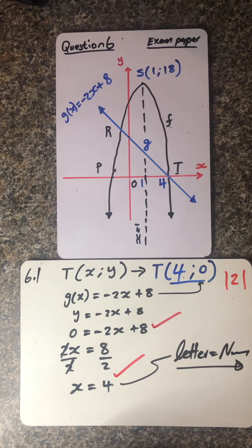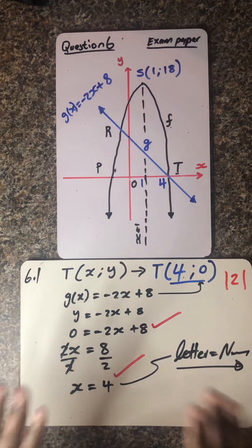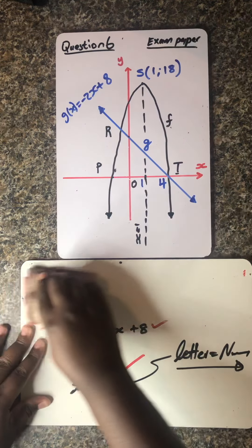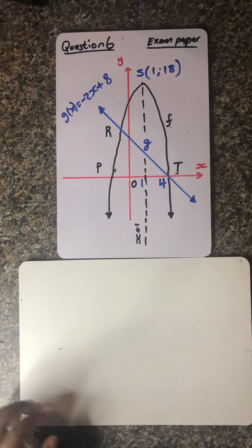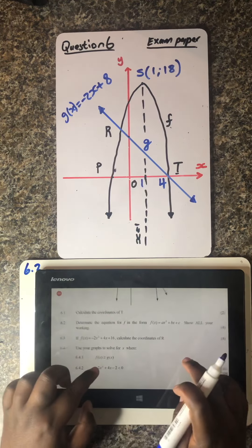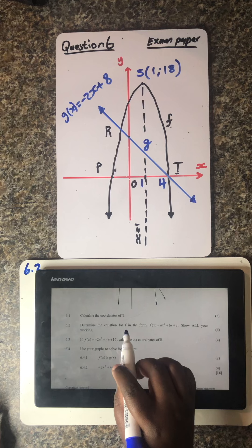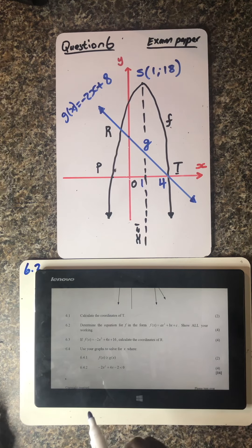So guys, for today's lesson it's actually going to be a bit tricky in a sense that I've got some challenges with my battery, but I hope you fully understood exactly what I did. So going to remove all of this information and then move to the next question which is 6.2. Let's check what the question wants us to do. Ladies and gentlemen, a question worth four marks. They say determine the equation for f, in the form f of x equals that — show all your workings.